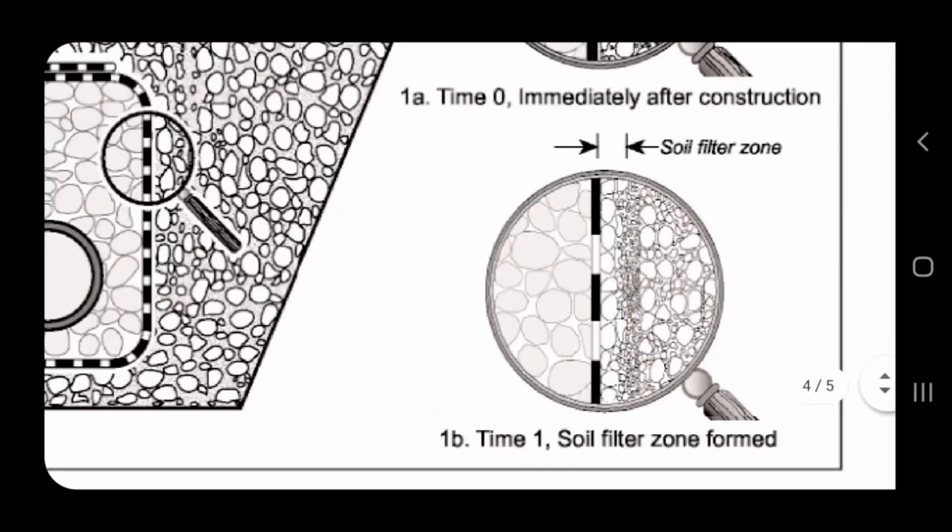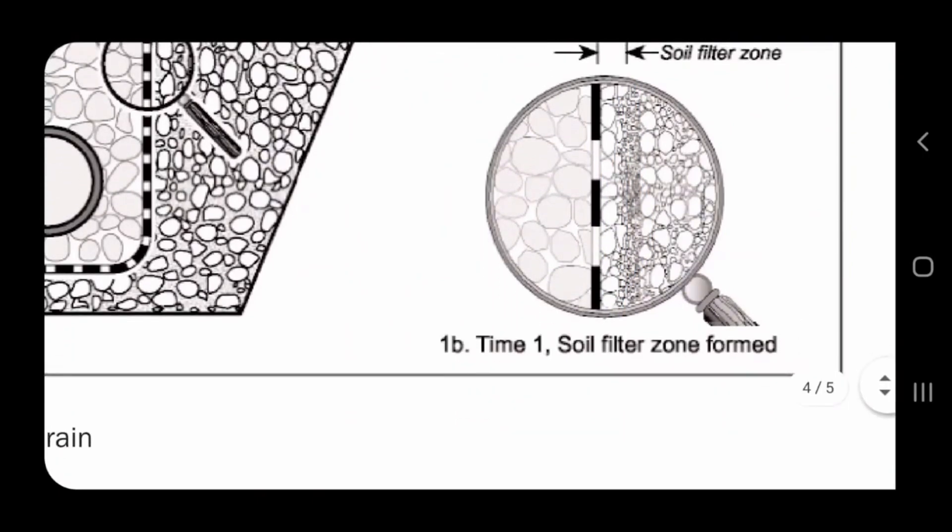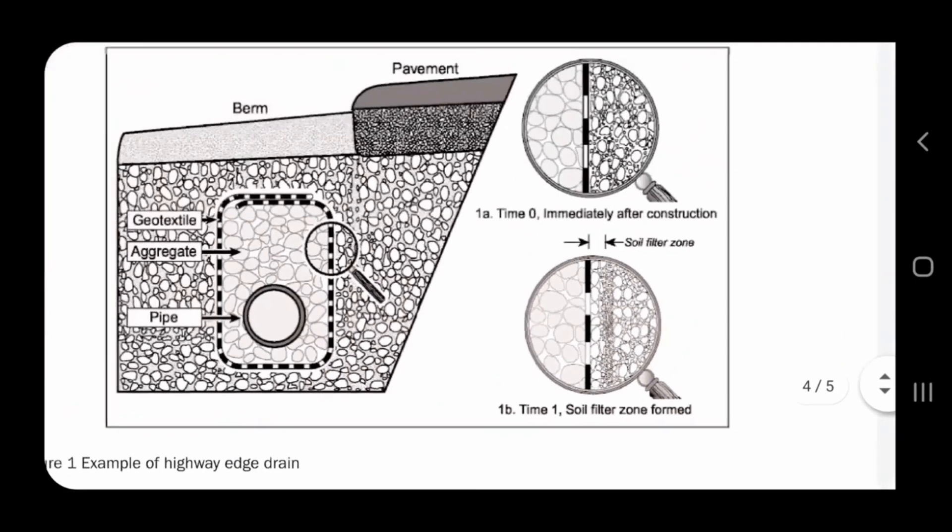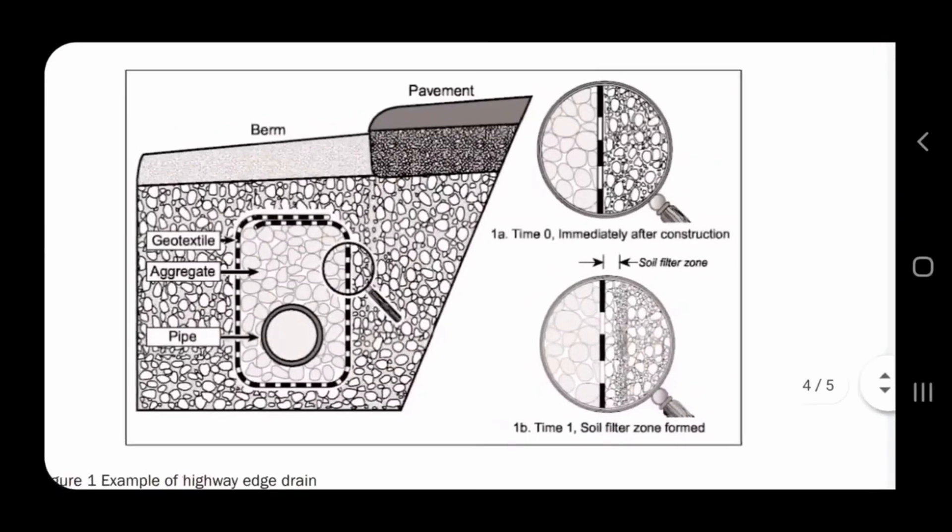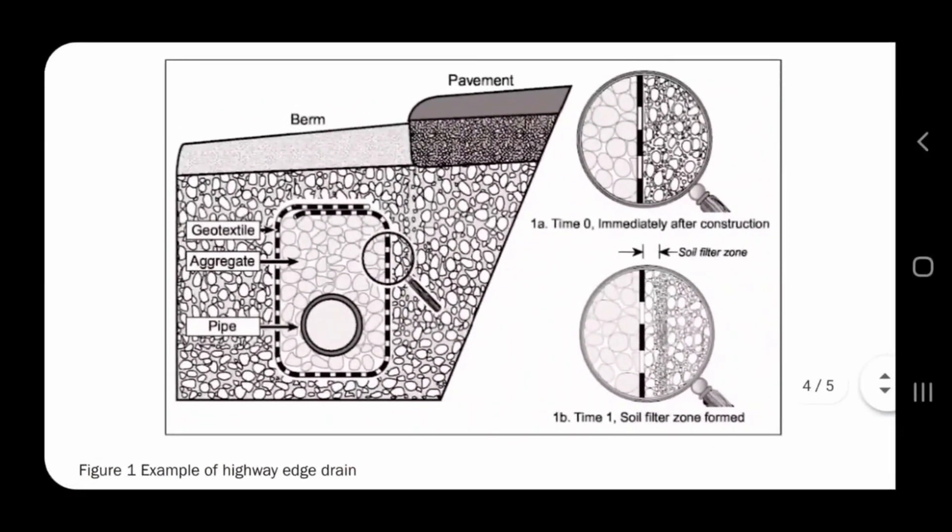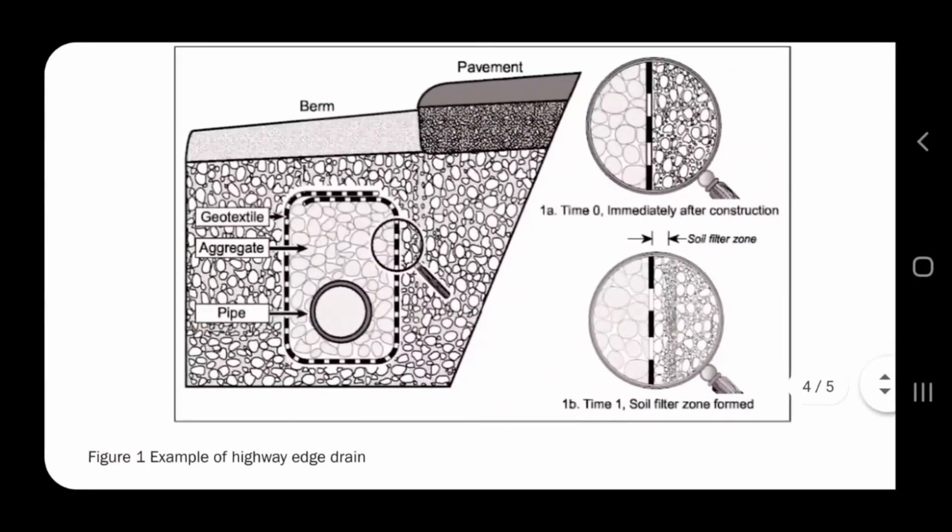Because the contractors that have switched over to our non-woven geotextile double punch fabric, they cannot believe how well it works. This is why it works so well and they won't go back to not using non-woven geotextile fabric that's double punched. So again, this is a great diagram, this is a great example of why our filter fabric is the way to go.